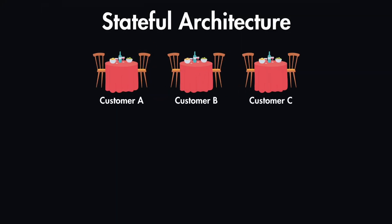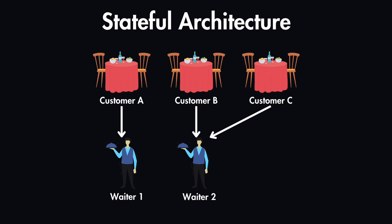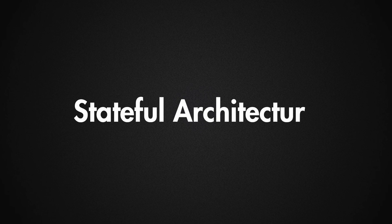Imagine you run a busy restaurant where the same waiter has to serve you from start to finish, so they remember your order and everything that you need. But here is the catch: if that waiter leaves for a break or there is a shift change, no one else knows what you ordered and you'd have to start over with someone new who doesn't know your order. This is similar to how a stateful architecture works.